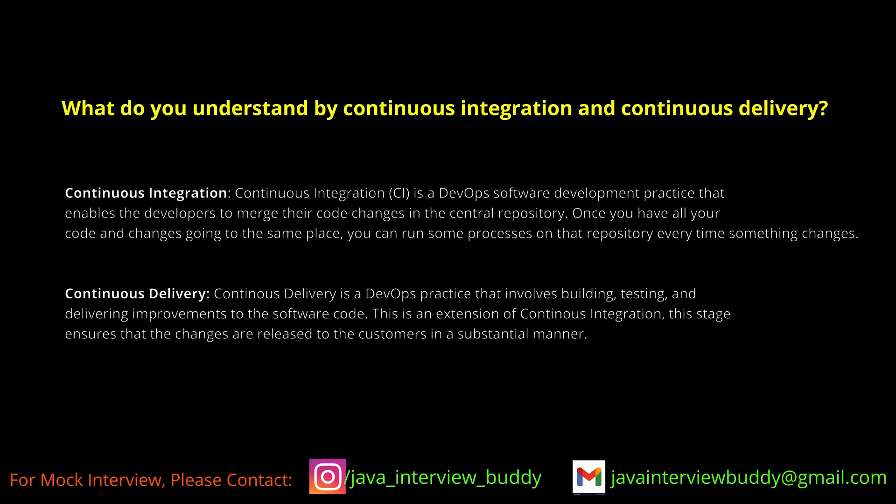What do you understand by continuous integration and continuous delivery? The basic lifecycle of any project is that we get the requirements, then we code the application, then we deploy on various environments — unit test environment, test environment, UAT, and finally production. It was a manual process. Previously all the developers were doing all these steps manually. Now we have the CI/CD pipeline where we can automate all this process.